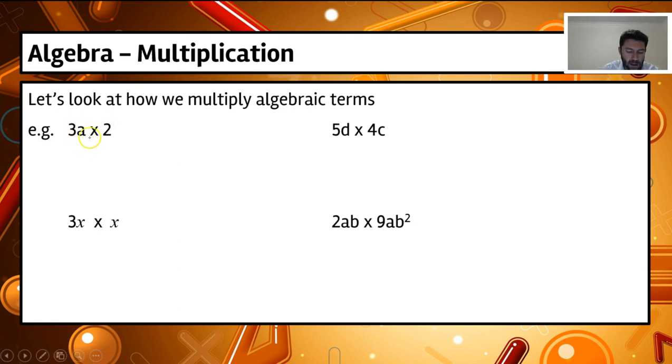If we have a look at this one here, we've got 3a times 2. Basically this will be 3 times 2, which is 6, and then a is just by itself, so that will equal 6a. That's like two lots of 3a basically gives you 6a.